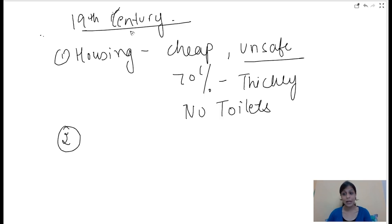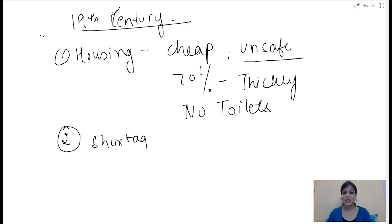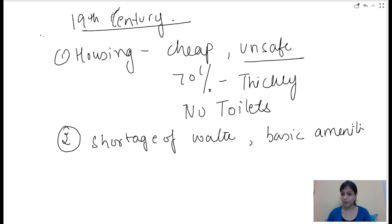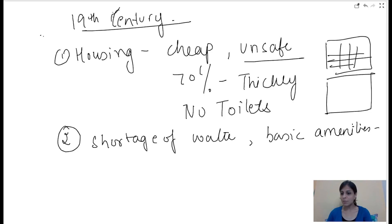The second problem was shortage of water and other basic amenities. Women had to wake up early, stand in long queues to fetch water for drinking and bathing. This led to quarrels on a daily basis. People slept on streets, cooked in neighborhoods, children played in open spaces — it was very overcrowded.